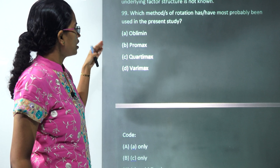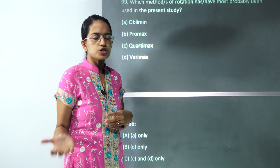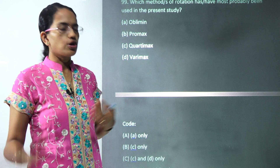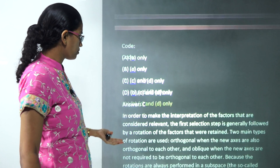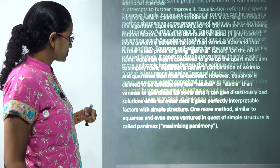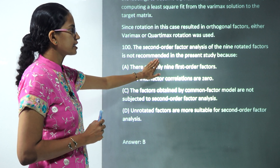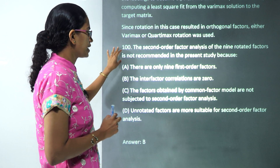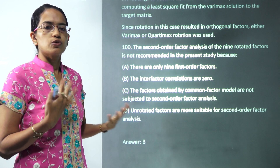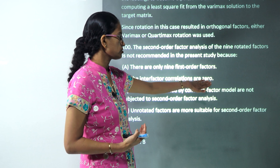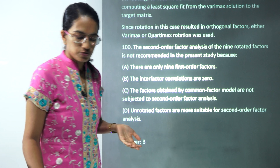The next question asks which type of rotation was used. Since the interfactor correlation was zero after rotation, the factors are uncorrelated — meaning orthogonal rotation was used. Quartimax and Varimax are both orthogonal methods, so C and D are the correct options. The final question asks why second-order factor analysis of the nine rotated factors is not recommended: since interfactor correlation is already zero, second-order factor analysis is not appropriate, making B the correct answer.